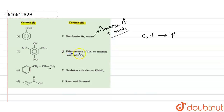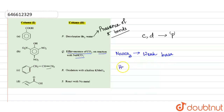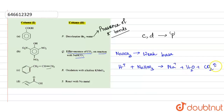The next reaction involves effervescence of carbon dioxide on reaction with NaHCO₃. NaHCO₃ is a weak base, so we need a strong acid to react with it to form a sodium salt along with water and carbon dioxide. The –COOH group is a very strong acidic group and will release CO₂ on reaction with NaHCO₃.